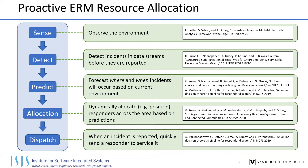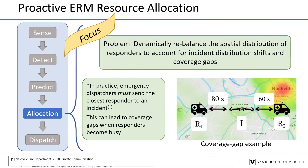Proactively managing such a system requires an integrated pipeline of components to sense the environment, detect incidents, predict future incidents, allocate the responders, and dispatch responders to incidents. In this paper, our focus is on the responder allocation problem, which is how to dynamically rebalance the spatial distribution of responders to account for both shifts in incident distribution over time and coverage gaps, which can occur as responders become busy attending to incidents.